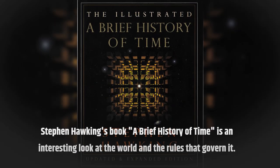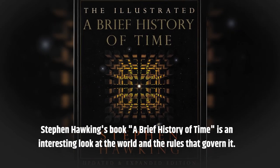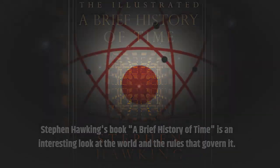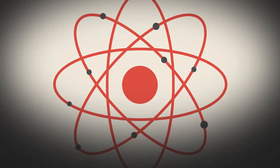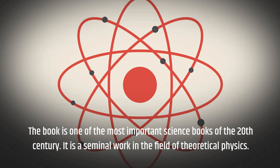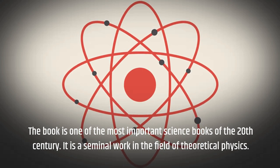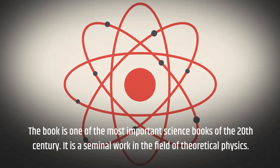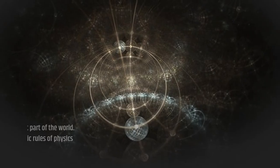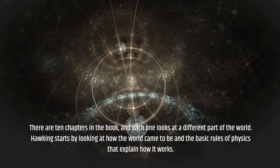Stephen Hawking's book A Brief History of Time is an interesting look at the world and the rules that govern it. The book is one of the most important science books of the 20th century and a seminal work in the field of theoretical physics. There are 10 chapters in the book, and each one looks at a different part of the world.